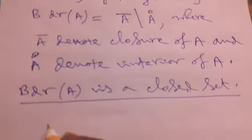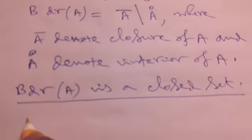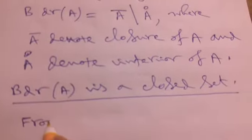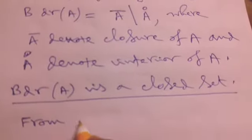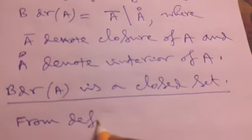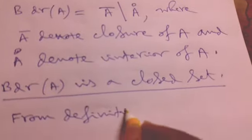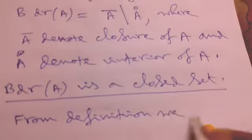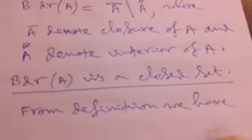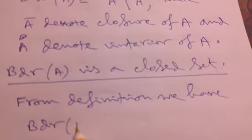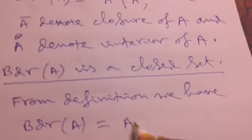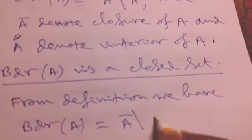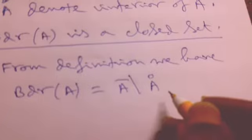At first we come to the definition. From the definition, we have BDR(A) = closure of A minus interior of A, that is Ā minus A°, as we defined.